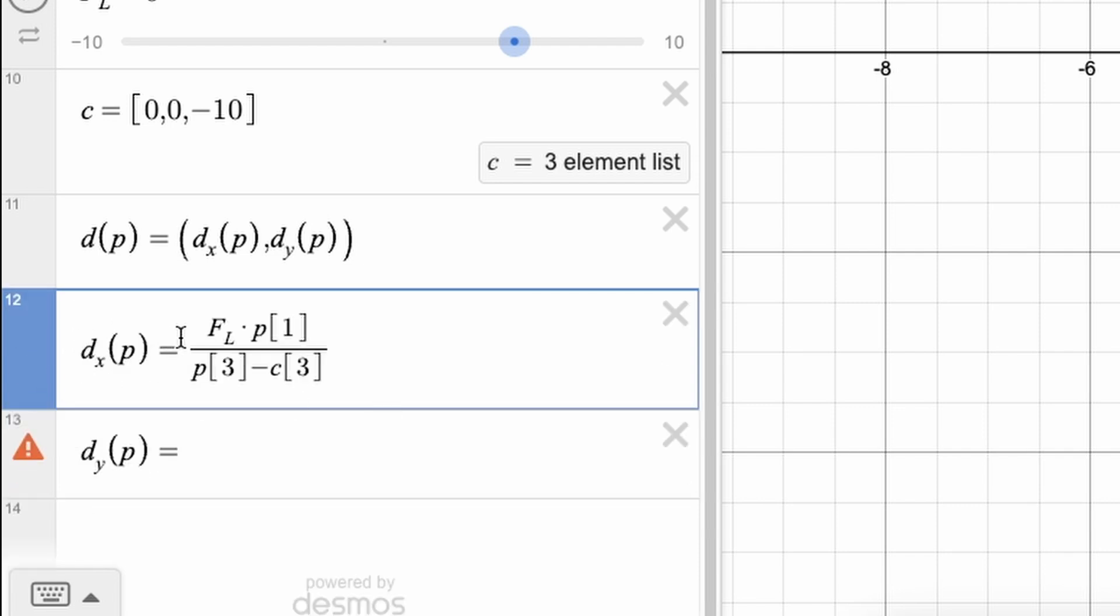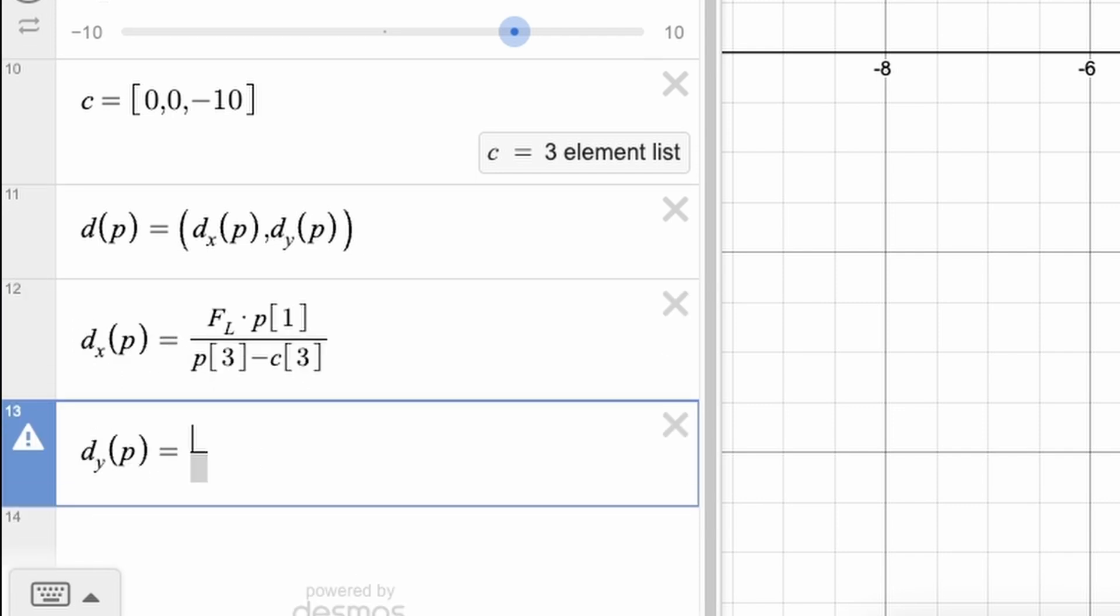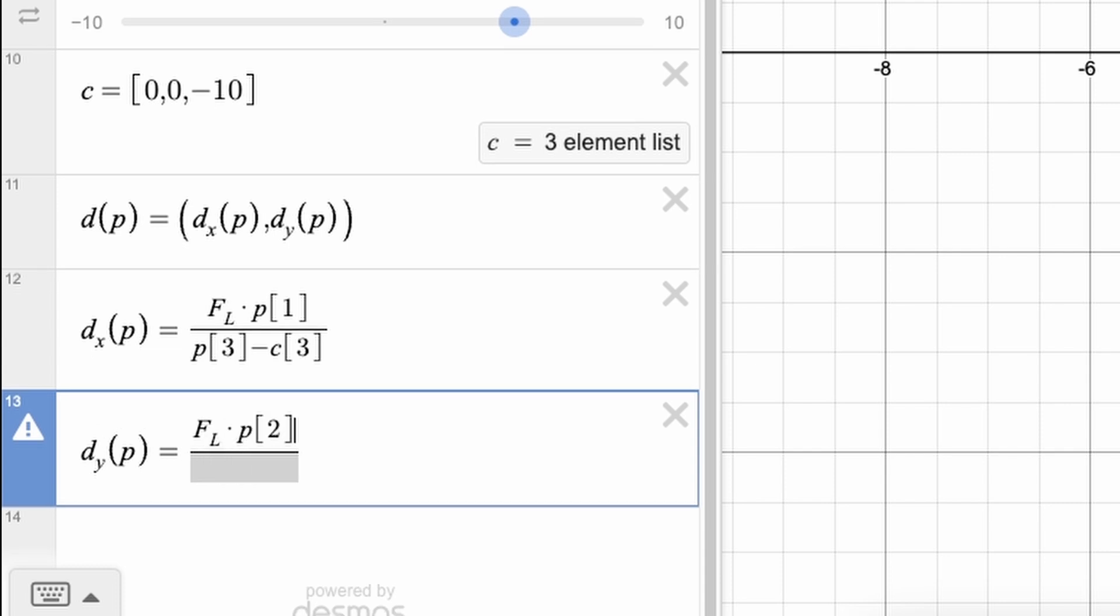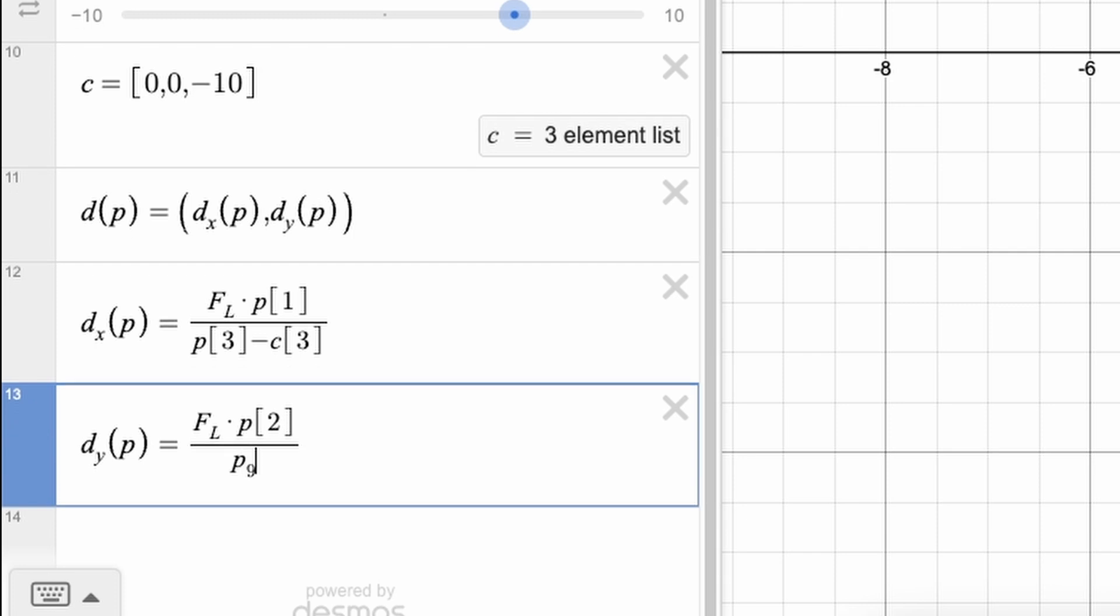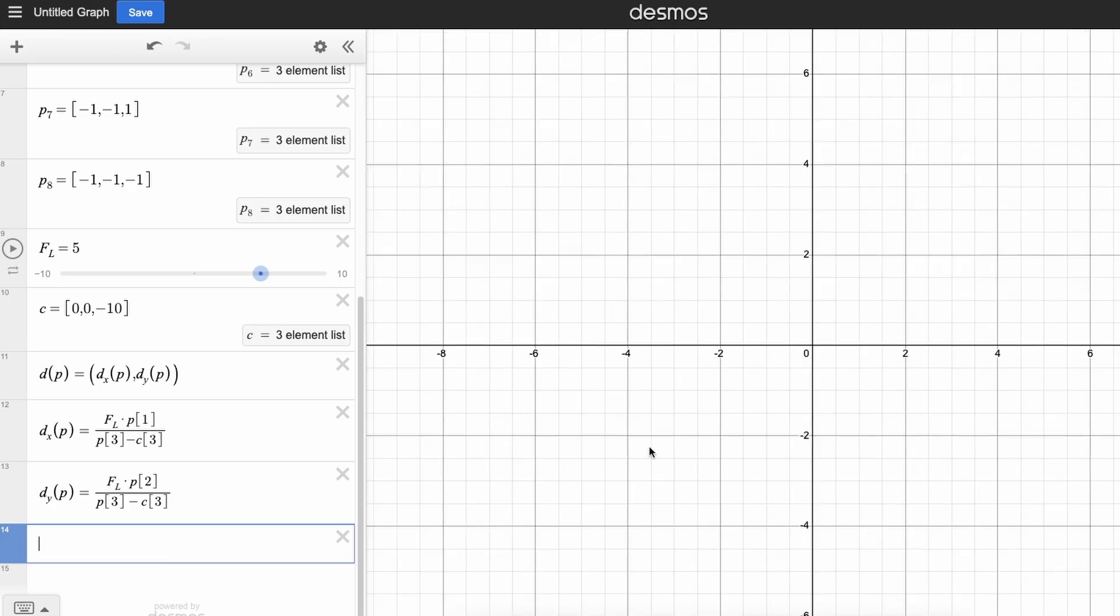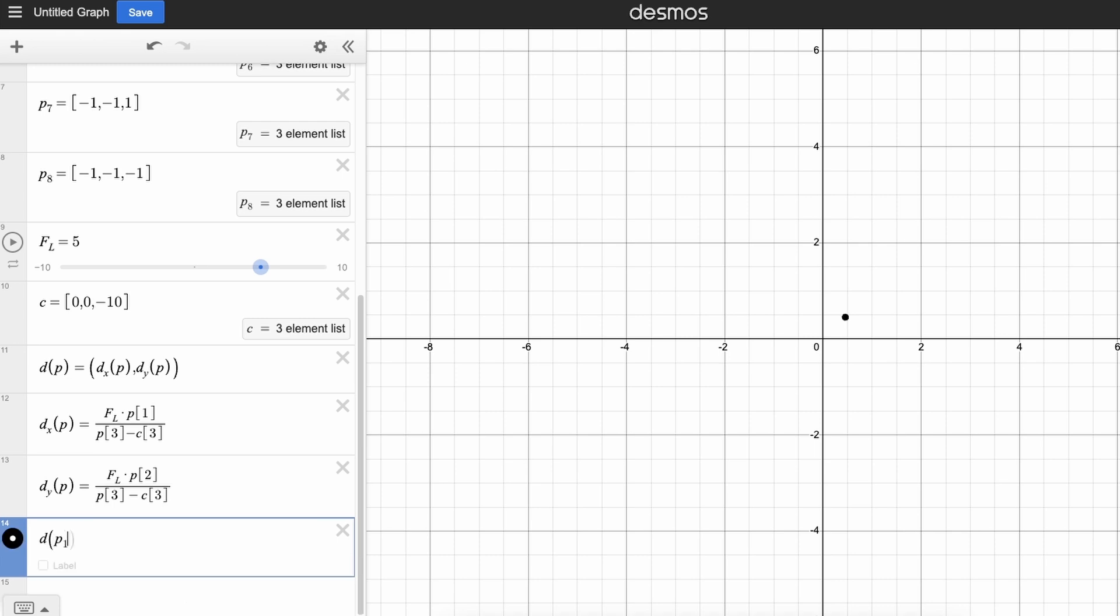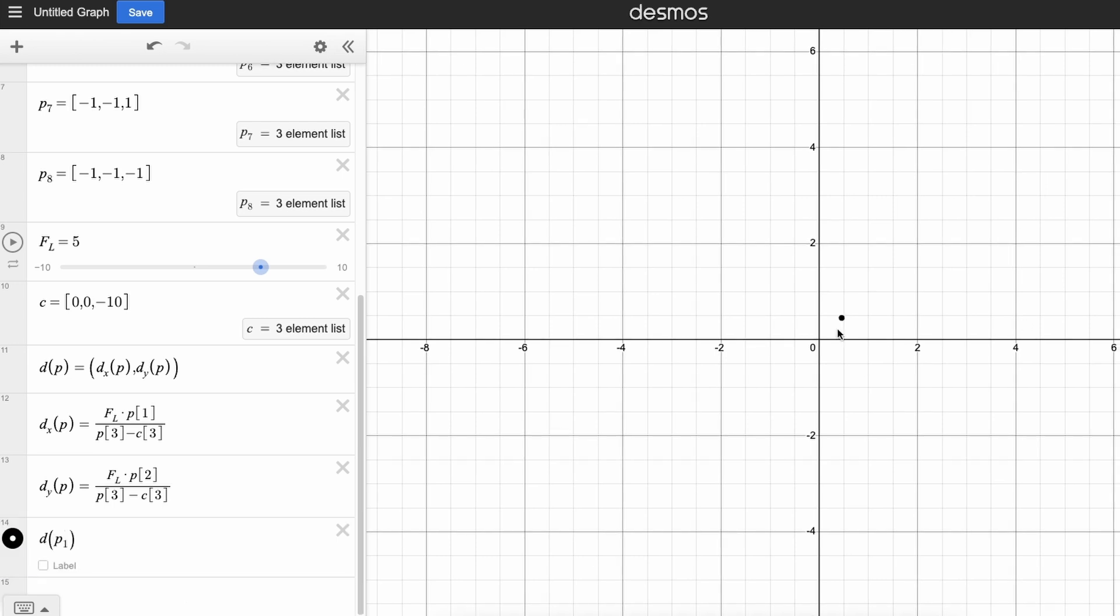So for the Y, it's the same equation, only it's now P2 instead of P1, and we've got the same thing on the bottom. So now finally, to display a point, we just need to type D of P, so D of P1, and then boom, that's our displayed version of point one.